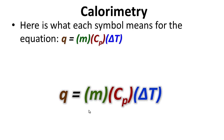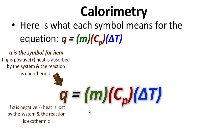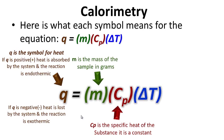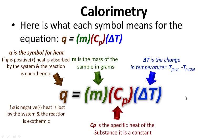So here's our equation. Q is the symbol for heat transfer. If Q is positive, heat is absorbed by the system and the reaction is endothermic. If Q is negative, heat is lost by the system and the reaction is exothermic. M is the mass of the sample in grams. C is the specific heat of the substance — this is a constant. Delta T is the change in temperature: the final temperature minus the initial temperature.